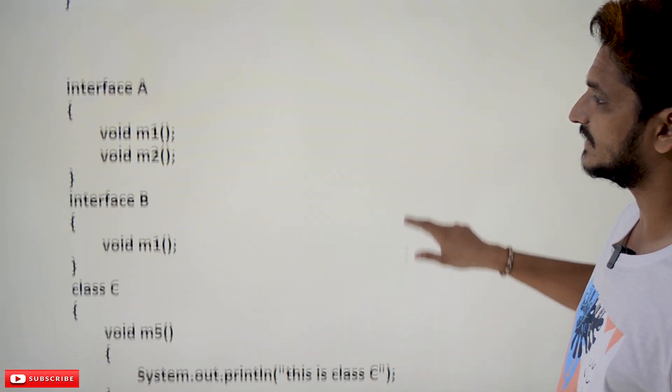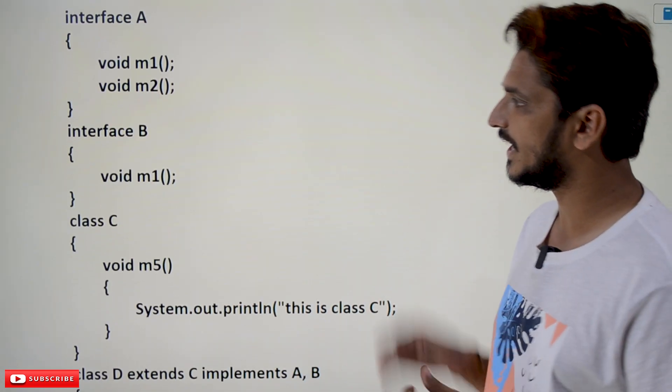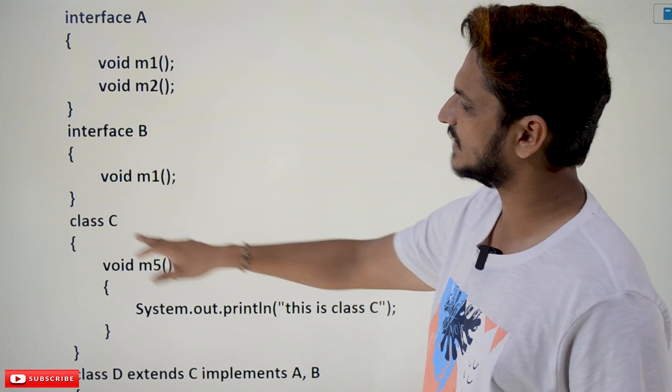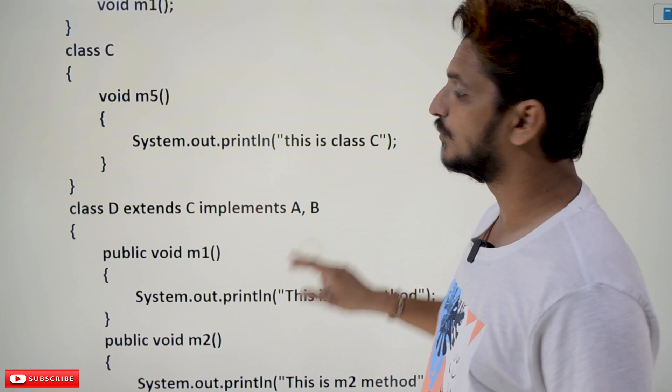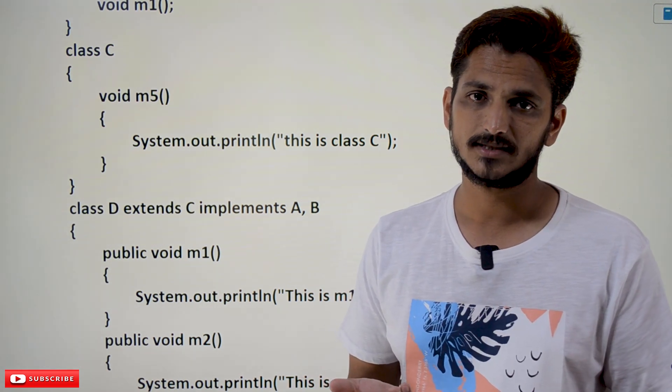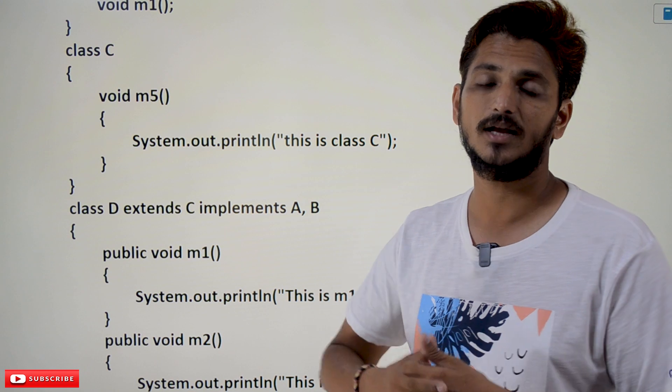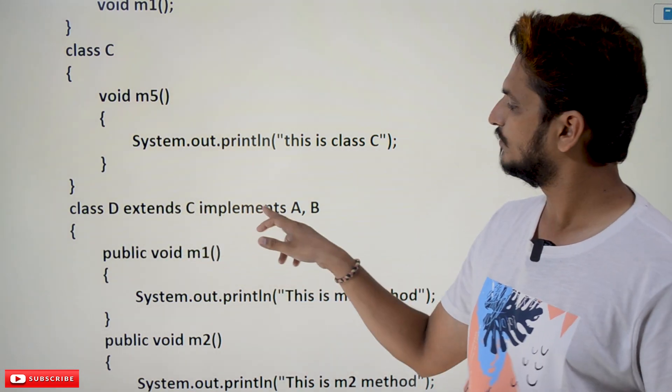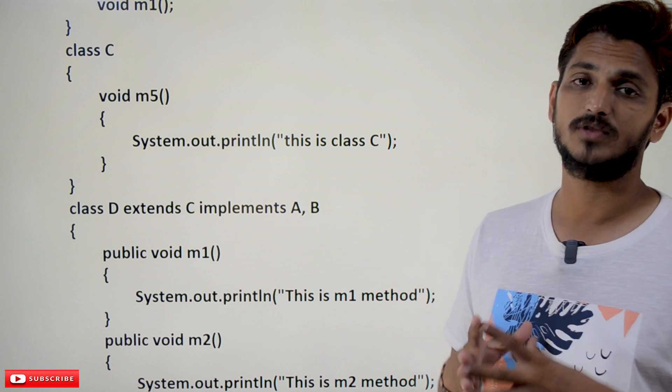Let's take another example. We have interface A, interface B, and class C. Now we can do both things - extend classes and implement interfaces. Class D extends C implements A, B. Yes, we can do both - extend a class and implement multiple interfaces simultaneously.